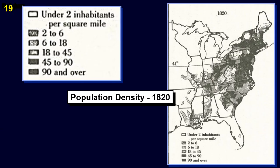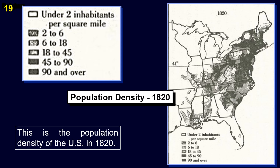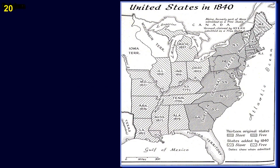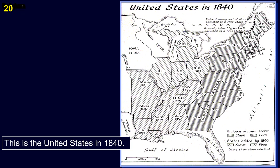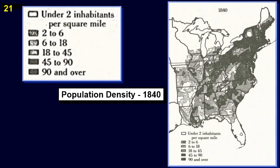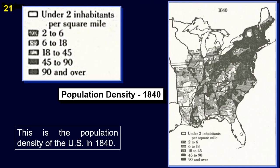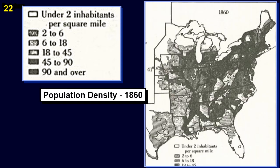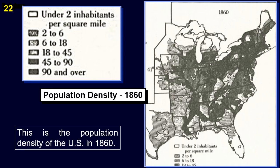This shows the population density of the U.S. in 1820, 1840, and 1860, illustrating how settlement spread westward over those decades.